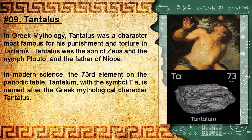Number 9: Tantalus. In Greek mythology, Tantalus was a character most famous for his punishment and torture in Tartarus. He was the son of Zeus and the nymph Plouto, and the father of Niobe. In modern science, the 73rd element on the periodic table, tantalum, with the symbol Ta, is named after the Greek mythological character Tantalus.